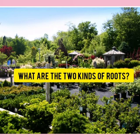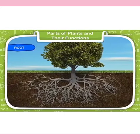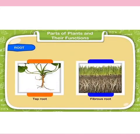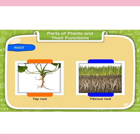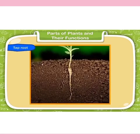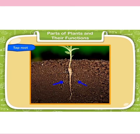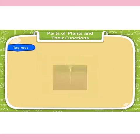What are the two kinds of roots? There are two types of roots: taproot and fibrous root. Some plants have taproots while some have fibrous roots. A taproot has one main thick root below the stem that goes deep inside the soil, from which smaller roots grow as its branches.